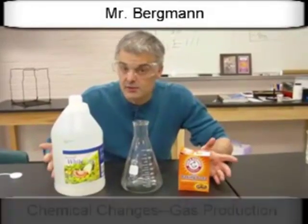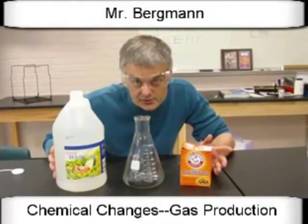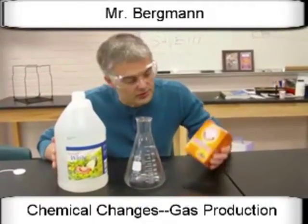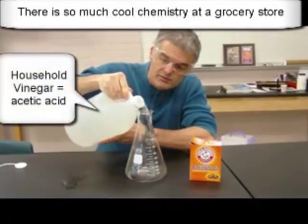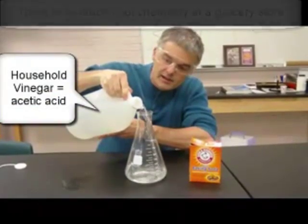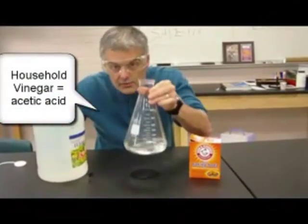This is an example of a chemical change. You see I went to my favorite chemical supply store, that would be the grocery store. And I bought some baking soda and some vinegar. Probably a lot of you have seen this. If I take some vinegar and I pour some vinegar into the Erlenmeyer flask.